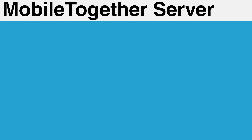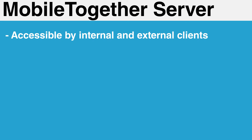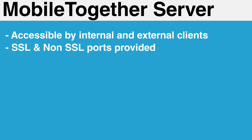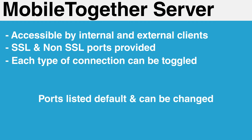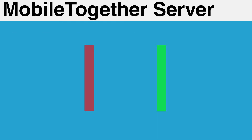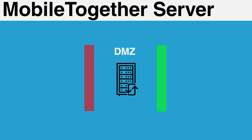Moving on to MobileTogether server. This server application will need to be accessible by both internal and external clients. I will be providing a set of ports for both SSL and non-SSL connections — the server can be configured to enable or disable each type. These ports are all default and can be changed as needed. Throughout this tutorial, we will be depicting two firewalls. Since we recommend placing MobileTogether in your DMZ, we are assuming you will have a firewall controlling traffic from the outside world, as well as one controlling traffic from your internal network. In many cases this may be the same physical device, but it's easier to conceptualize as different devices.